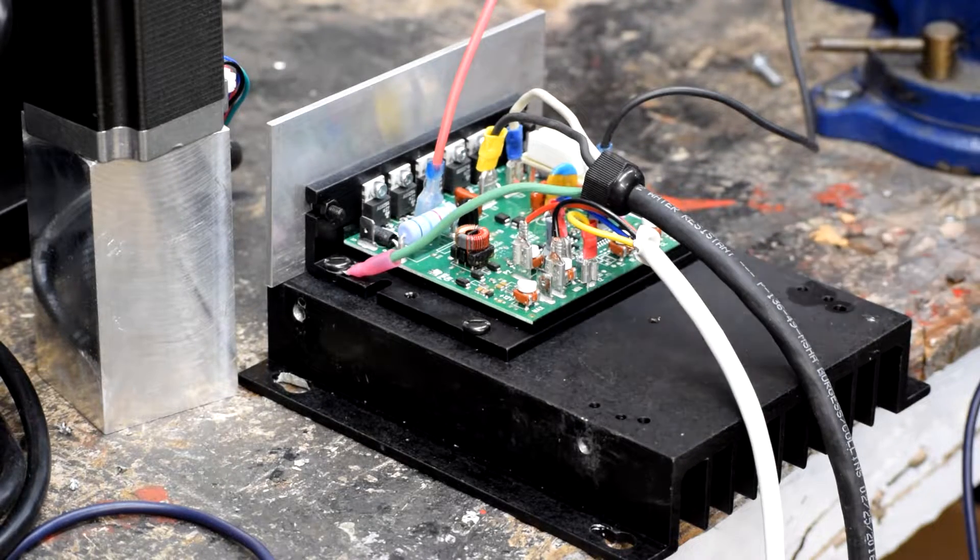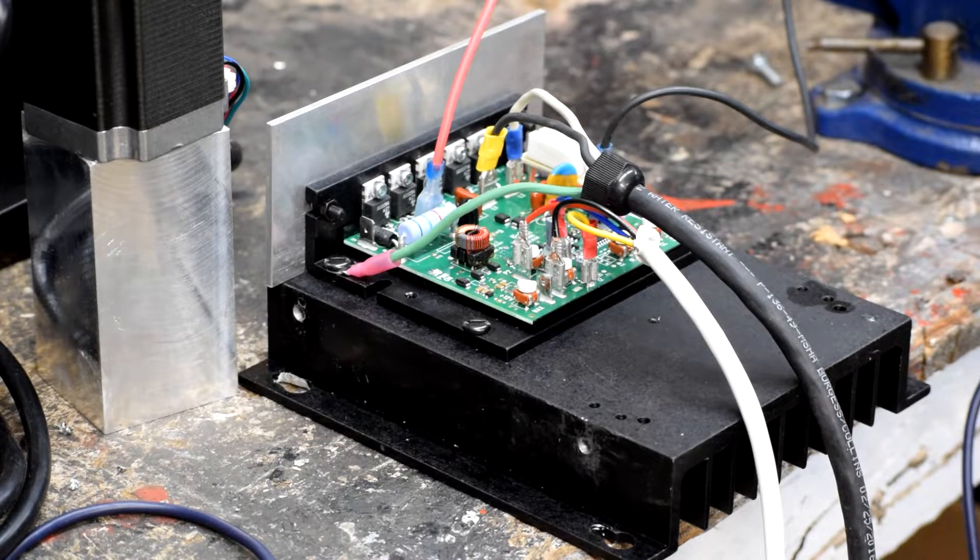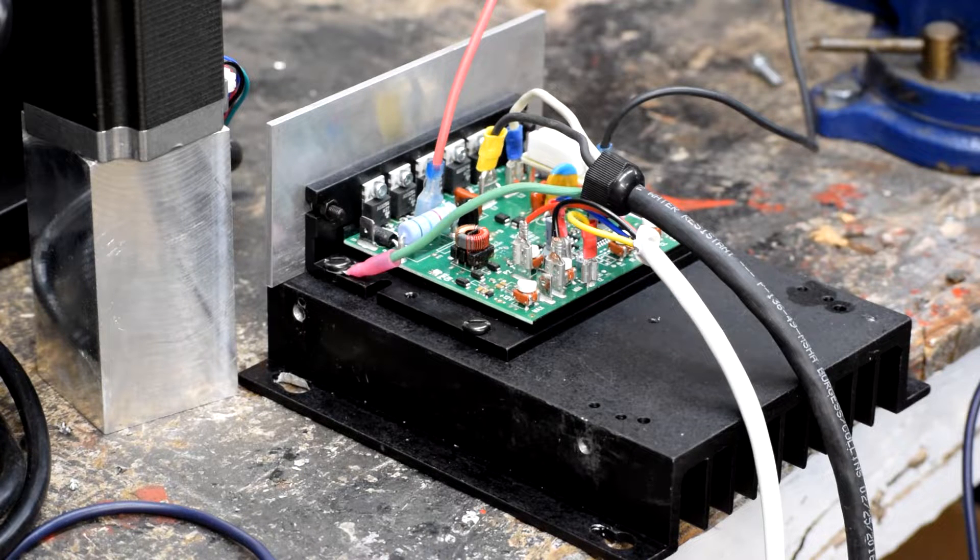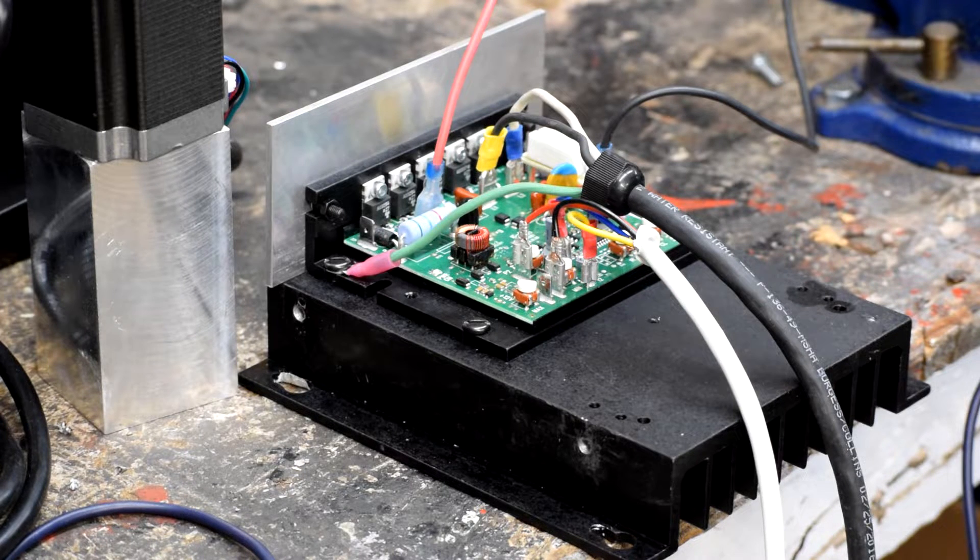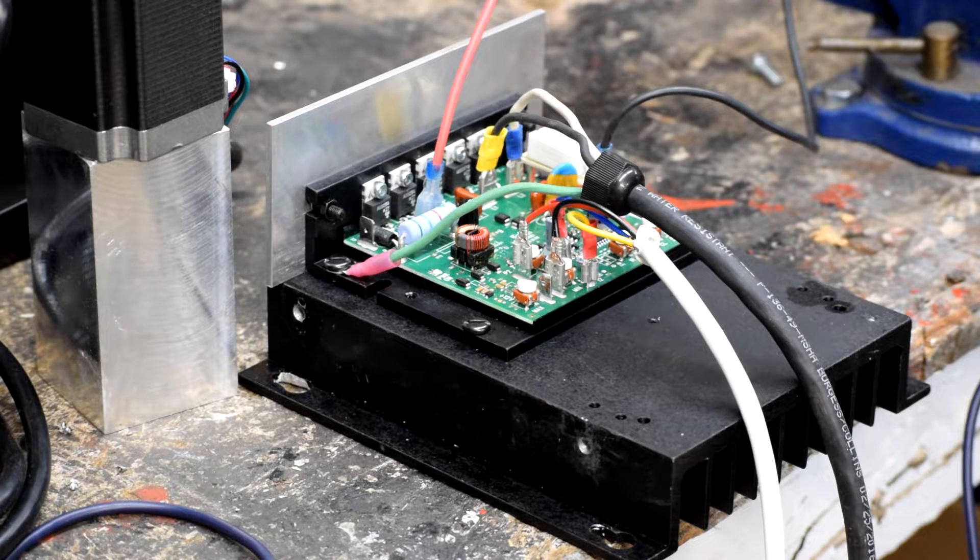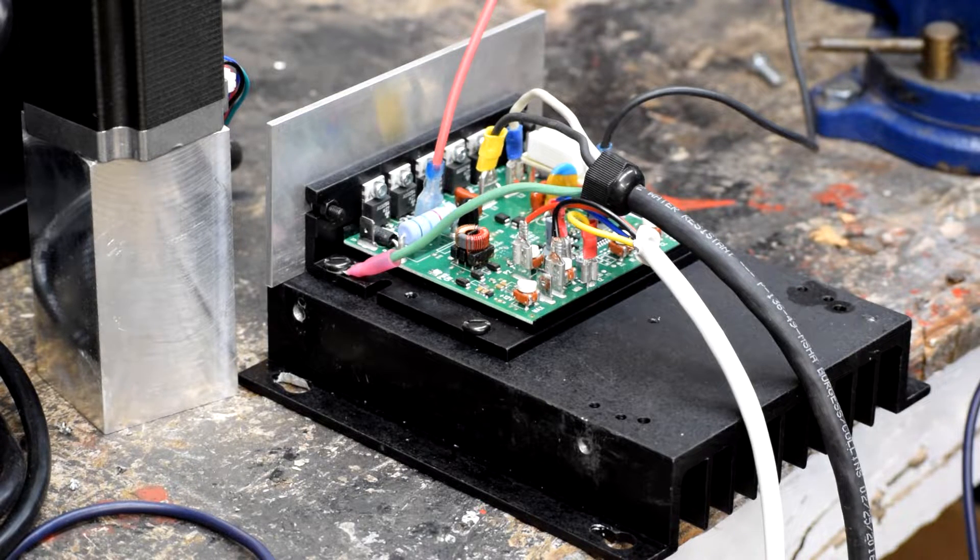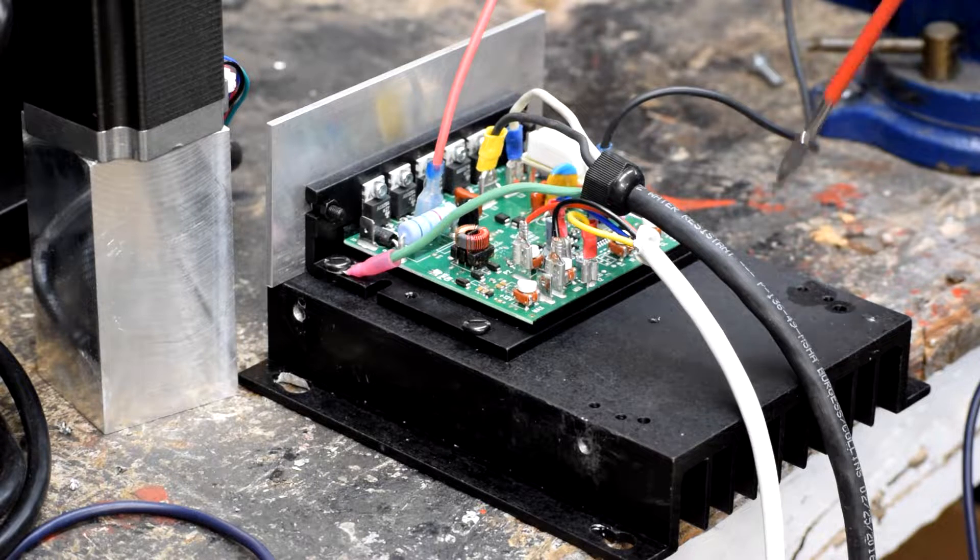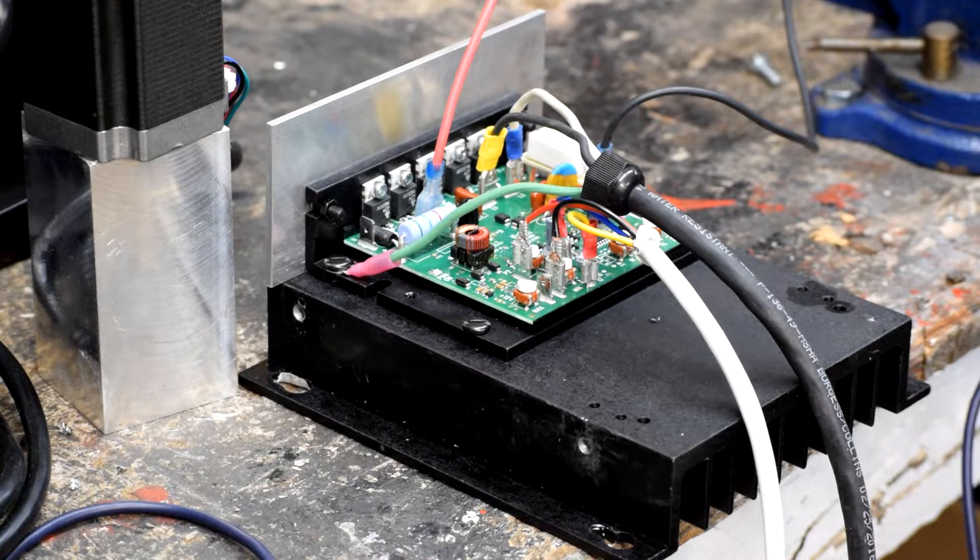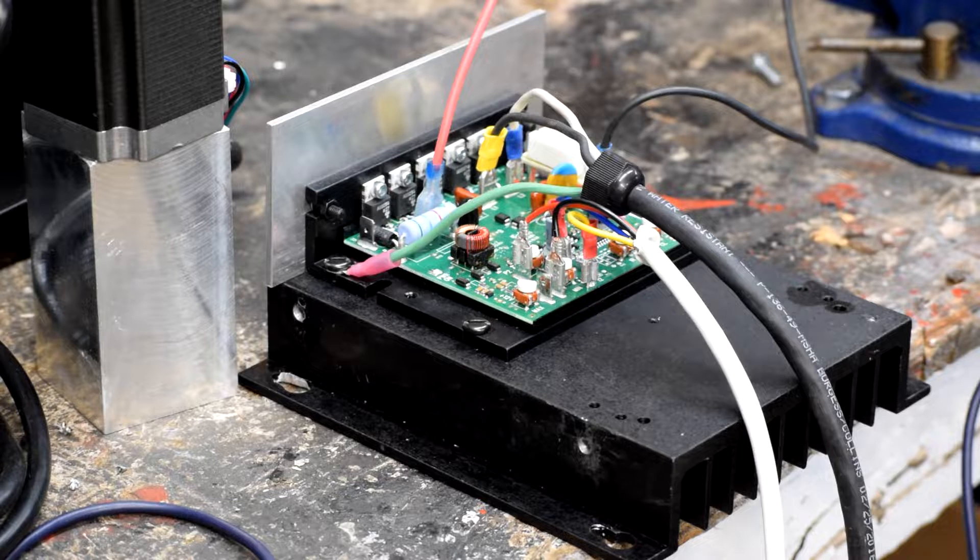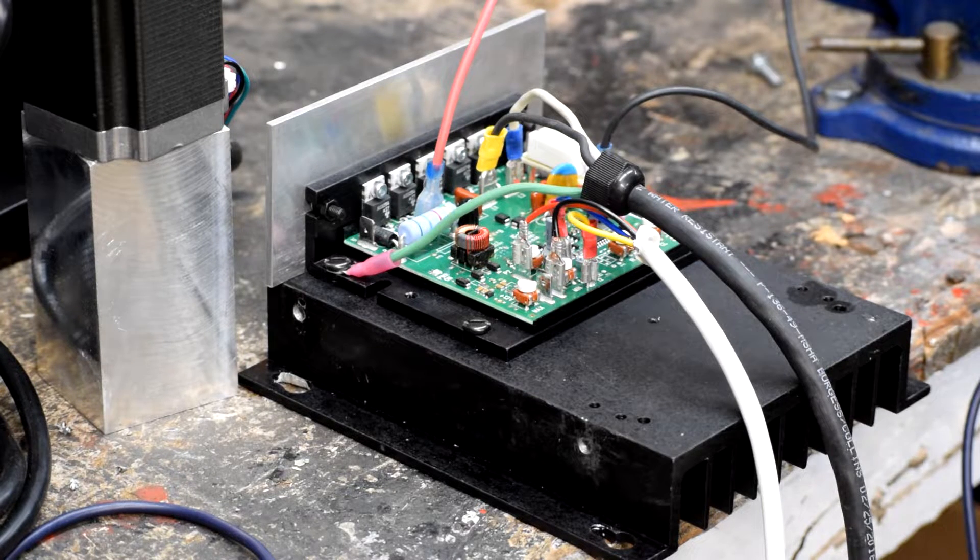So this piece here is the DC motor driver. It takes AC in and it puts DC out. This is a KB electronics KBIC KB125 motor driver, which is to say that it is capable of powering up to a 1.5 horsepower DC motor in a voltage range up to 95 DC volts. So this is perfect for our current motor.